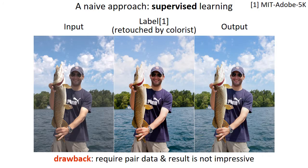A naive approach for image enhancement is using supervised learning, where the label is the input image retouched by a colorist, and we learn the mapping function directly. However, it requires paired data and the result is not impressive.